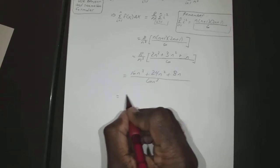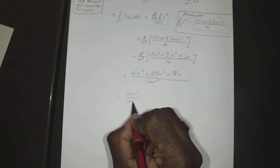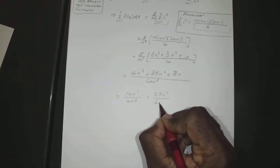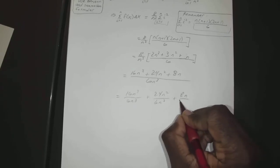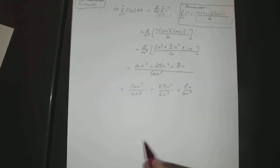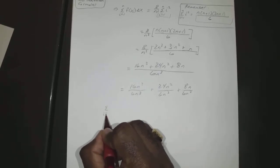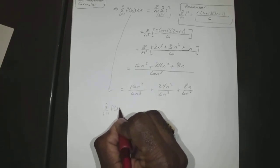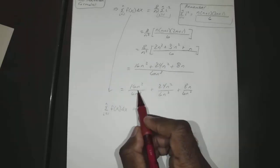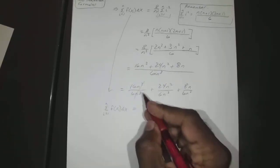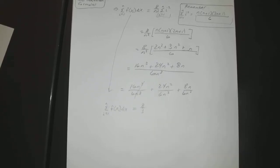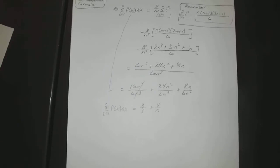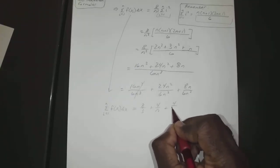Separating the terms: 16n³ over 6n³ plus 24n² over 6n³ plus 8n over 6n³. Simplifying, that gives 8/3 plus 4/n plus 4/(3n²).